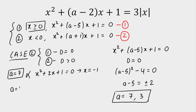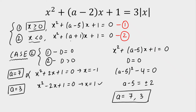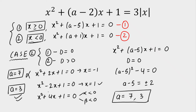Now checking A equals 3. For A equals 3, the first equation becomes X squared minus 2X plus 1 equals 0, giving X equals 1. This is accepted — a positive root as required. For the second equation with A equals 3, we get X squared plus 4X plus 1 equals 0. Both roots alpha and beta will be less than 0, which satisfies the condition for X less than 0. Therefore A equals 3 is our solution.